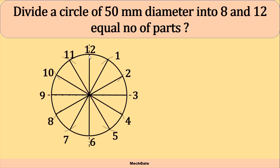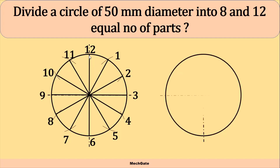This way we divide a circle into 12 equal parts. Now let's divide the circle into 8 equal parts. First draw the circle along with the horizontal and vertical center lines. The center line has already divided the circle into 4 parts. To divide into 8 parts we have to bisect each and every quadrant of the circle. We already know how to bisect any angle — you can watch that video by clicking the 'i' button. Let's bisect this angle: take the corner point as center and any convenient radius.